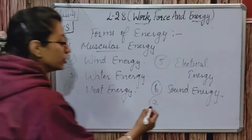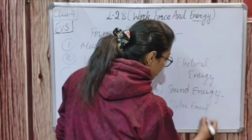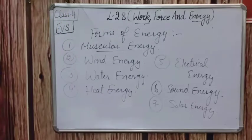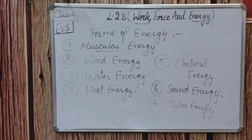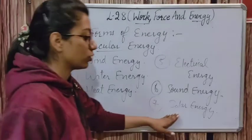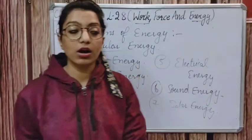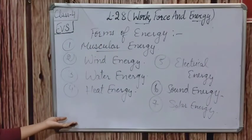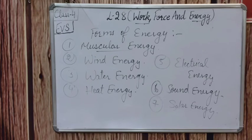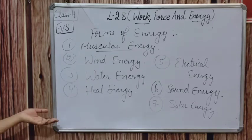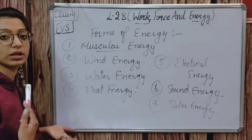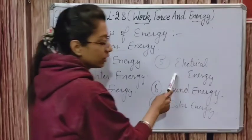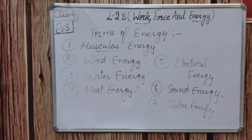Next is solar energy. Solar energy is the energy we get from the sun. These days solar energy is used in solar cookers and solar heaters for cooking and heating. Most houses now have solar plates on the roof, and from those, electricity is generated for the house. So solar energy is the energy that we get from the sun. To summarize, the forms of energy we learned today are: muscular energy, wind energy, water energy, heat energy, electrical energy, sound energy, and solar energy — seven forms of energy.